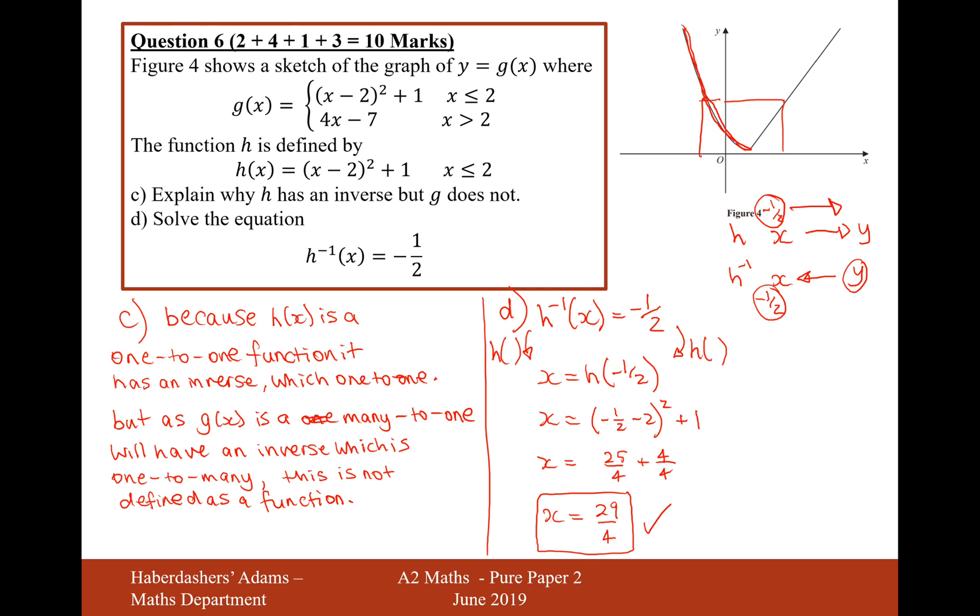Hopefully that's a little bit of an explanation as to why you can just work out what h of minus a half is and the answer is 29 over 4. That's the answer to question 6. Let's now move on to question 7.